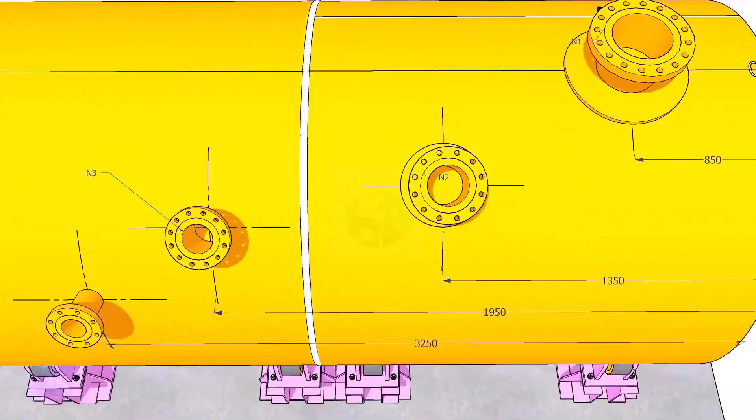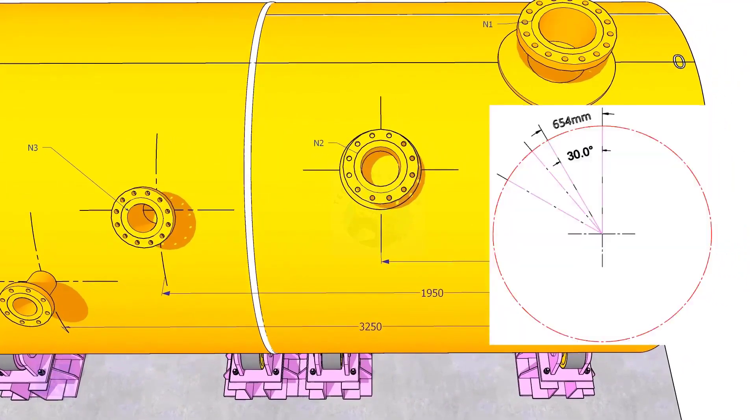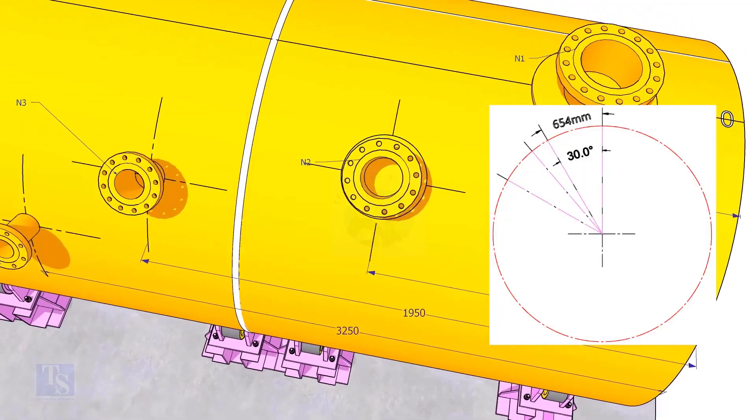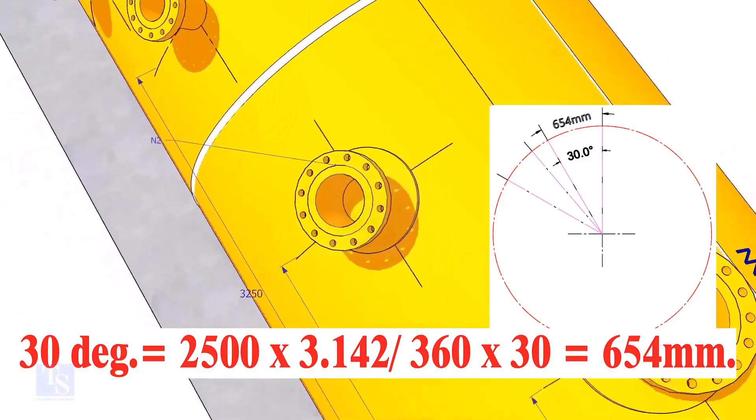Let us mark the center of nozzle N2. It comes on 30 degrees anti-clockwise. Convert 30 degrees to arc length.